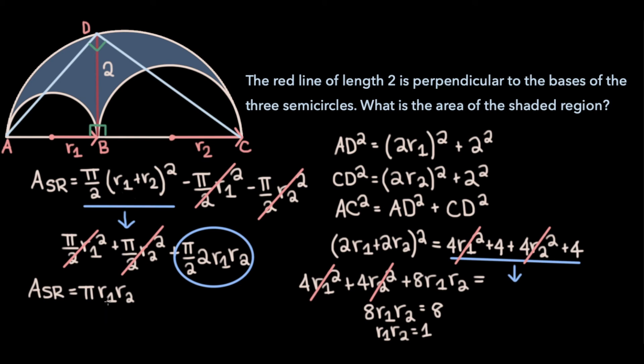And so the area of the shaded region, which we said was π times r1 times r2, is just π.